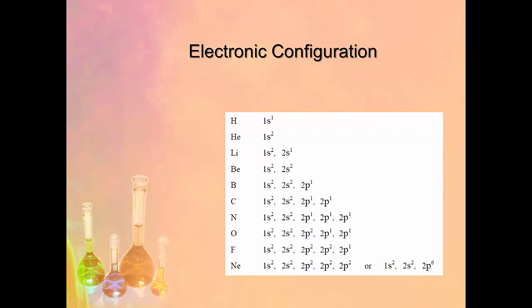The electronic configuration is something you'd normally do after completing your orbital diagram. After practicing a few, you can jump straight to writing the electronic configuration without the orbital diagram first. For example, hydrogen is 1s¹, helium is 1s², and lithium is 1s², 2s¹, and so on as we move through.